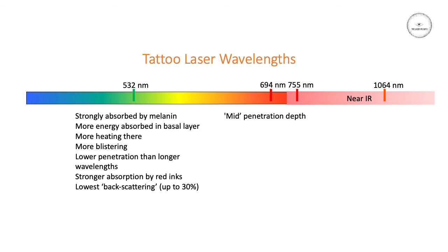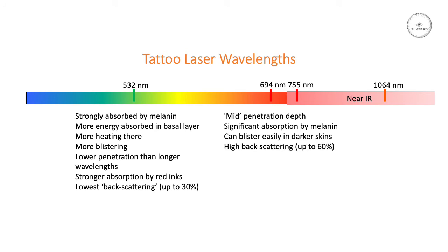With the Ruby and Alexandrite wavelengths, they have a sort of middle penetration depth compared to the 532 and the 1064. Again, you can get significant absorption by melanin at these wavelengths, so you will get blistering in darker skin types unfortunately. These wavelengths have the highest back scattering levels — up to 60% — which is a significant loss of energy, meaning a big chunk of the energy is just being back scattered straight back out of the skin.